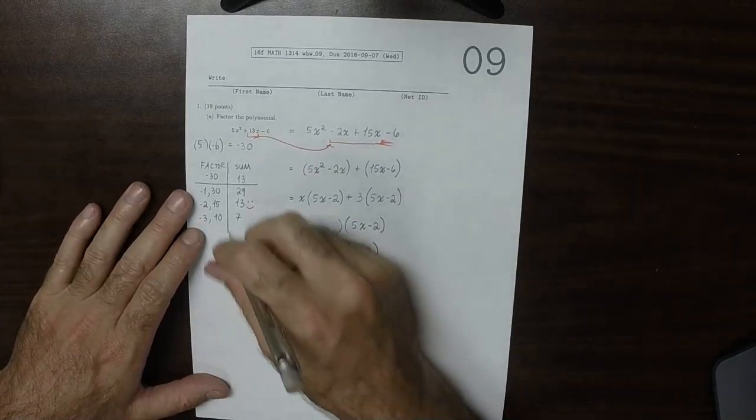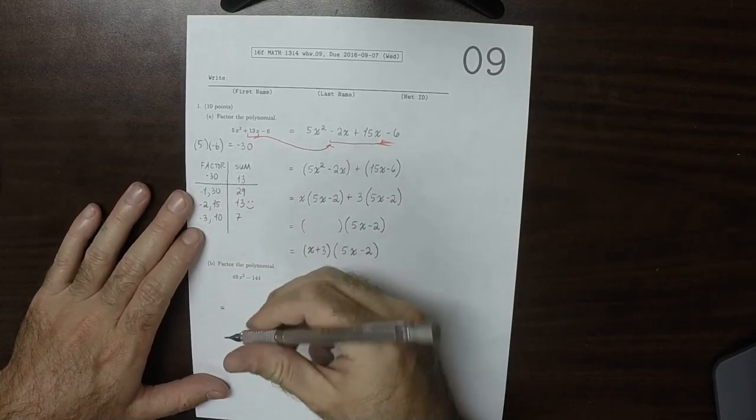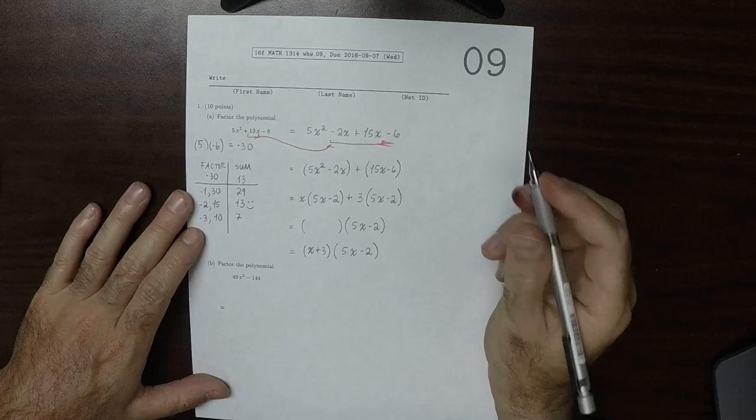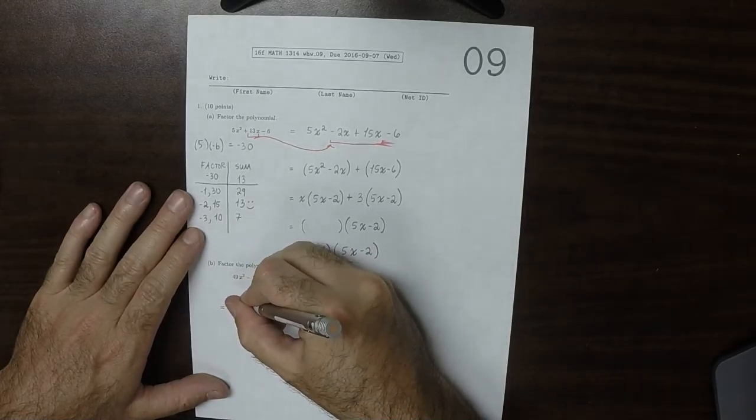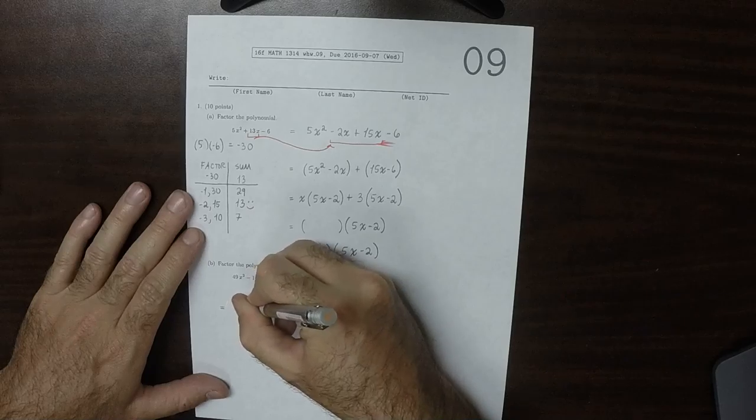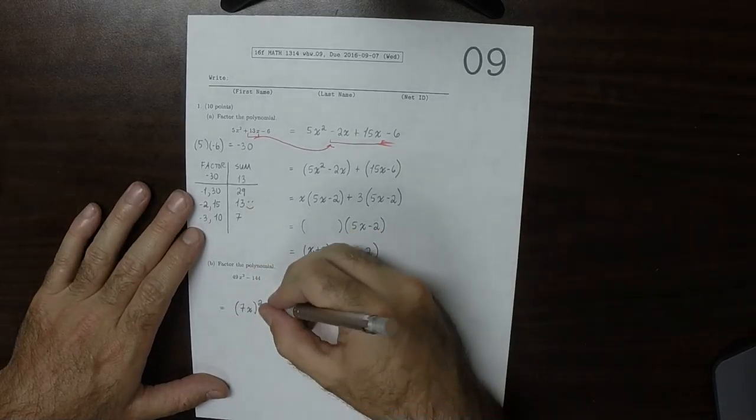So for this one, we could use a similar technique, but this one is even easier because it can be written as the difference of squares. So 49x squared, well, that's 7x squared, and then 144, that's 12 squared.